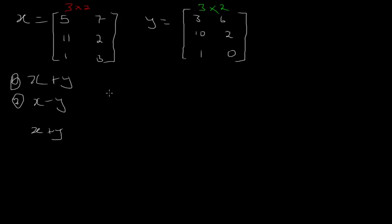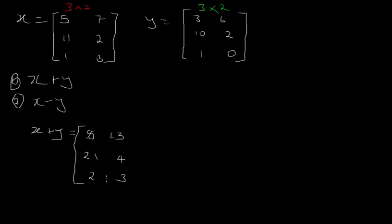X plus Y is possible. Each element in matrix X has a corresponding element in matrix Y. So 5 plus 3 gives 8, 7 plus 6 gives 13, 11 plus 10 gives 21, 2 plus 2 gives 4, 1 plus 1 gives 2, and 3 plus 0 gives 3. This is the result when you add matrix X to matrix Y.